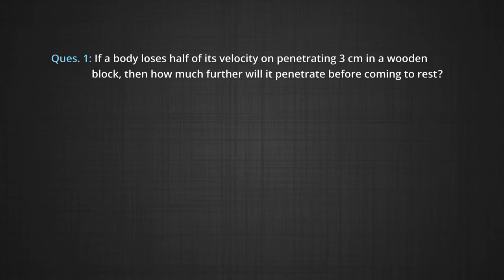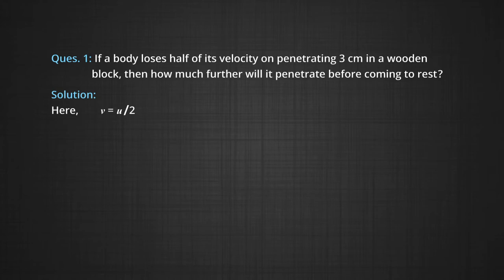Question 1: If a body loses half of its velocity on penetrating 3 cm in a wooden block, then how much will it penetrate more before coming to rest? Given: final velocity V = U/2, because the body loses half its velocity, and S = 3 cm, which is the displacement.